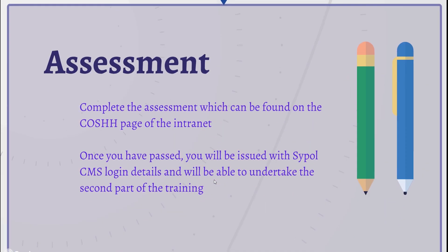Congratulations! You have now completed part one of COSHH Assessor training. Go to the COSHH intranet web pages to access the second part of the training and the assessment that you will need. If you pass the assessment, you will be issued with login details for the CIPOL CMS system. You should then be able to start undertaking COSHH assessments for your area.